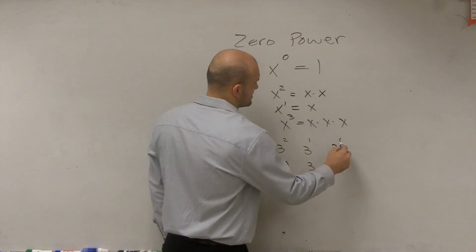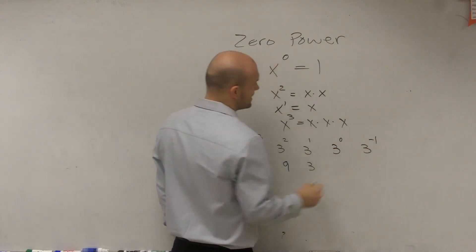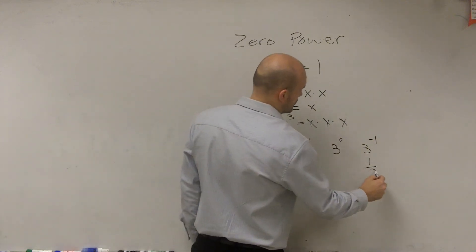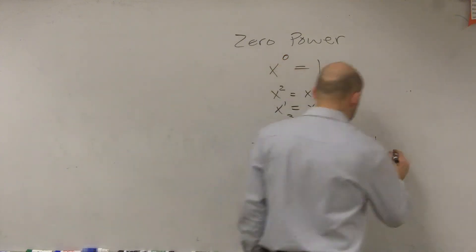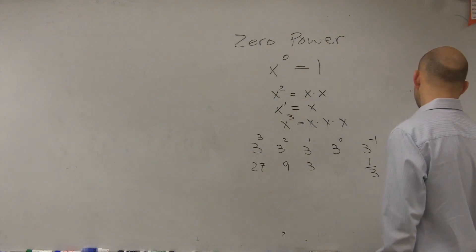Let's see what 3 to the zero power would be, which we'll get to. 3 to the negative first power is now going to be 1 third. 3 to the negative second is 1 ninth. And 3 to the negative third is 1 over 27.